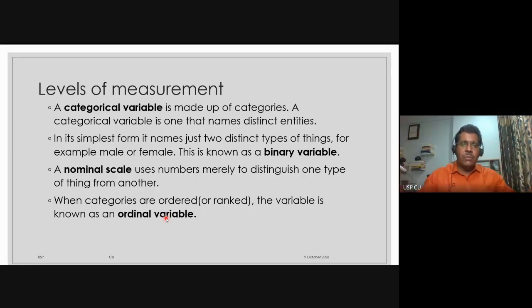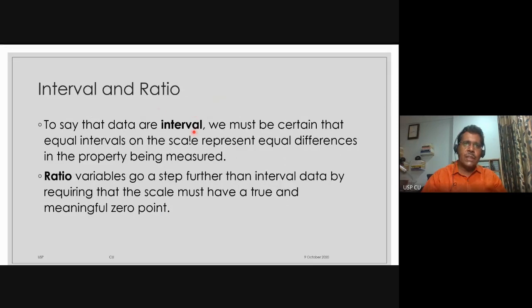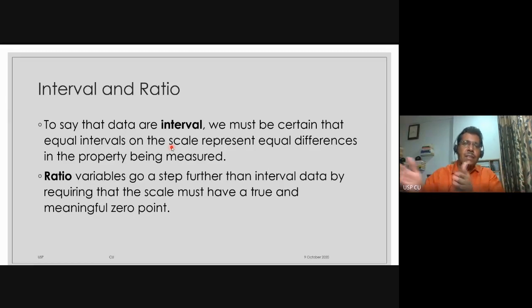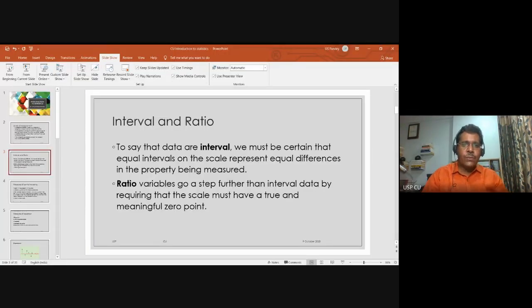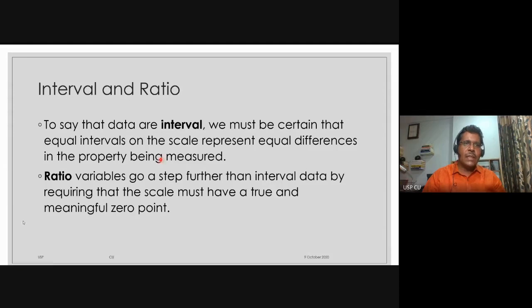The difference between an ordinal variable and an interval variable is that in the interval variable there are equal intervals on the scale. The distance between 1 and 2 is exactly the same as the distance between 2 and 3, or between 1001 and 1002. In an ordinal scale, they are just ranks from highest to lowest. So interval variables are very different from ordinal variables, and the distinction is not just semantic — it's mathematical because many calculations treat them differently.